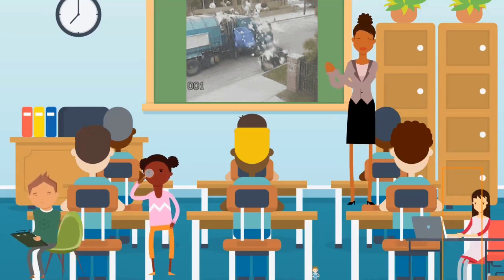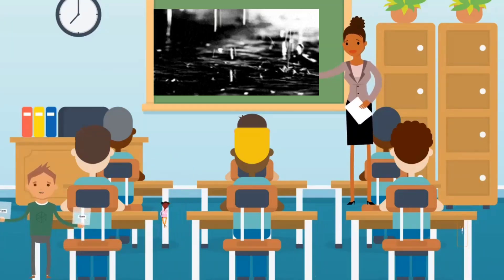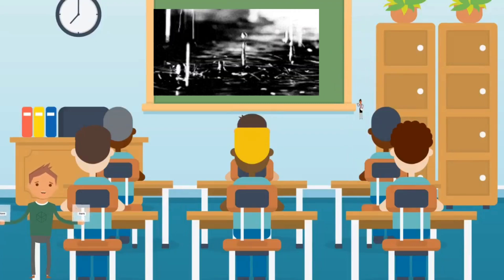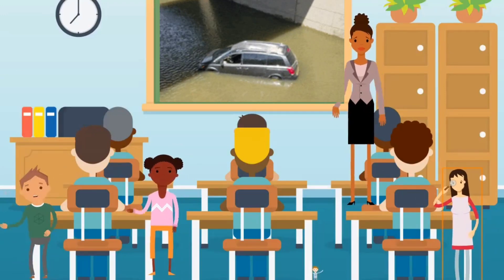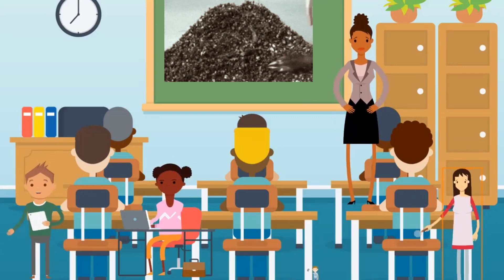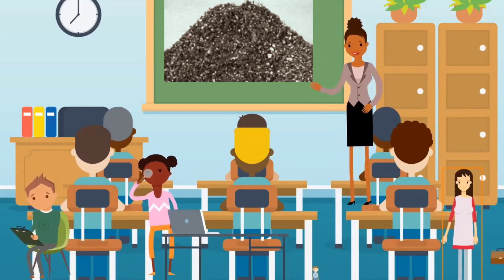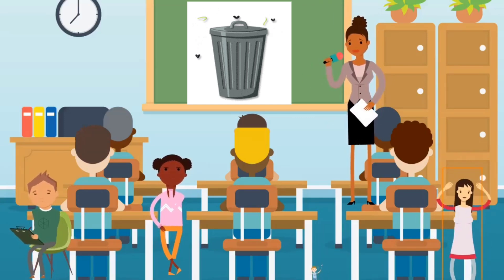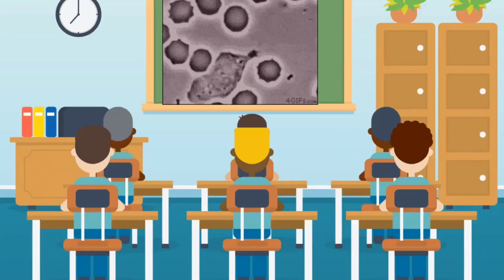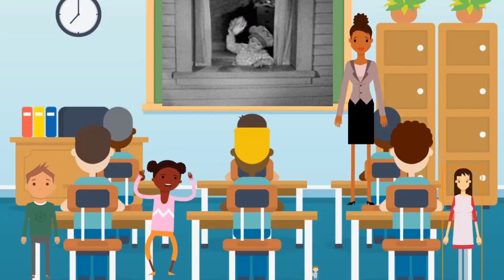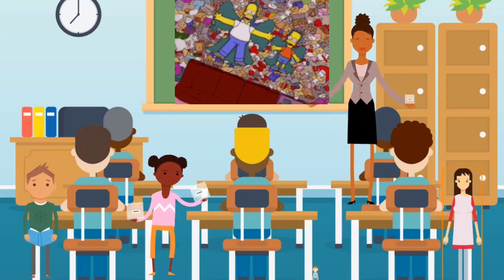Improper waste disposal can cause many problems. First, the trash makes our surroundings dirty and smelly. It can also block drains and cause flooding, especially when it rains. What do you think will happen when water can't flow through the drains because they're blocked with garbage? Yes, you are right — it may lead to flooding. Another problem is that when trash piles up, it can become a breeding ground for insects and pests like flies, mosquitoes, and rats. They love dirty areas with lots of garbage. So, as you can see, improper waste disposal is more than just making our streets look bad — it can lead to serious health and environmental problems.